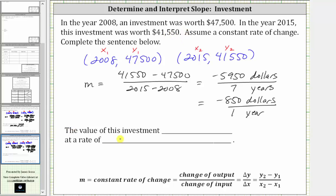So the value of this investment decreased at a rate of — we don't include the negative here because the negative indicates the decrease — $850 per year. I hope you found this helpful.